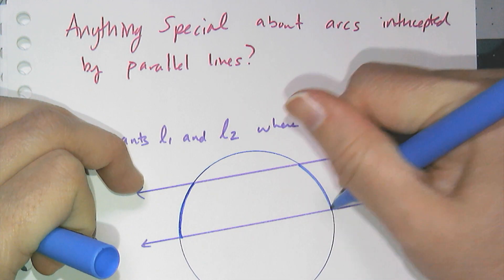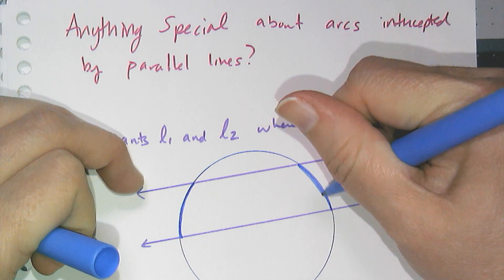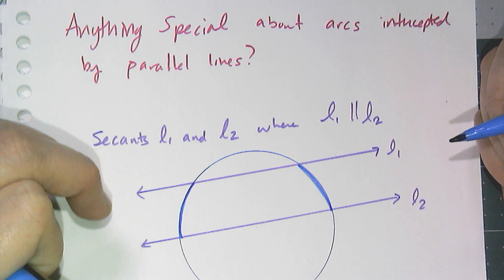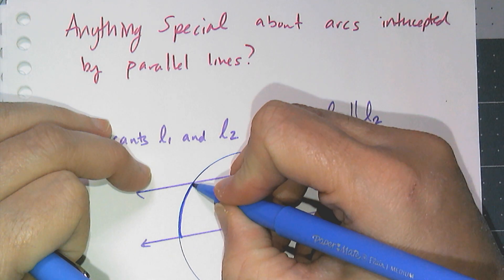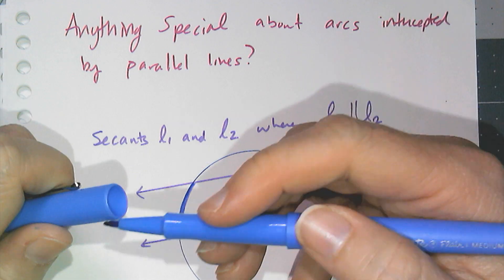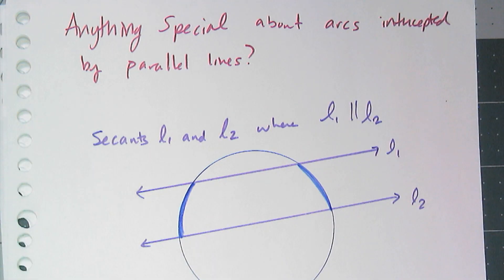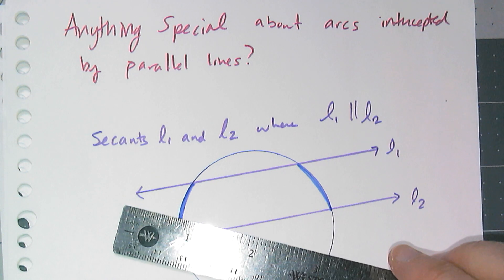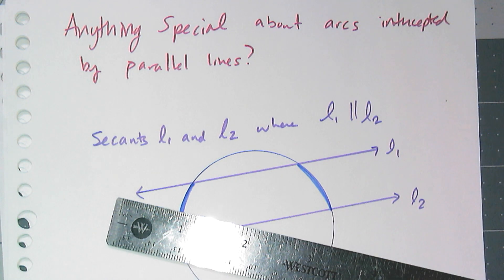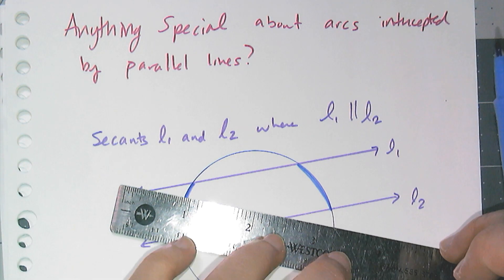Now, you probably can guess that these two arcs have equal measure. Because it makes sense that they have equal measure, like it's kind of intuitive because of the way parallel lines work in Euclidean geometry. They're equal distance, so it feels like they have to be chopping off the same arc measures.